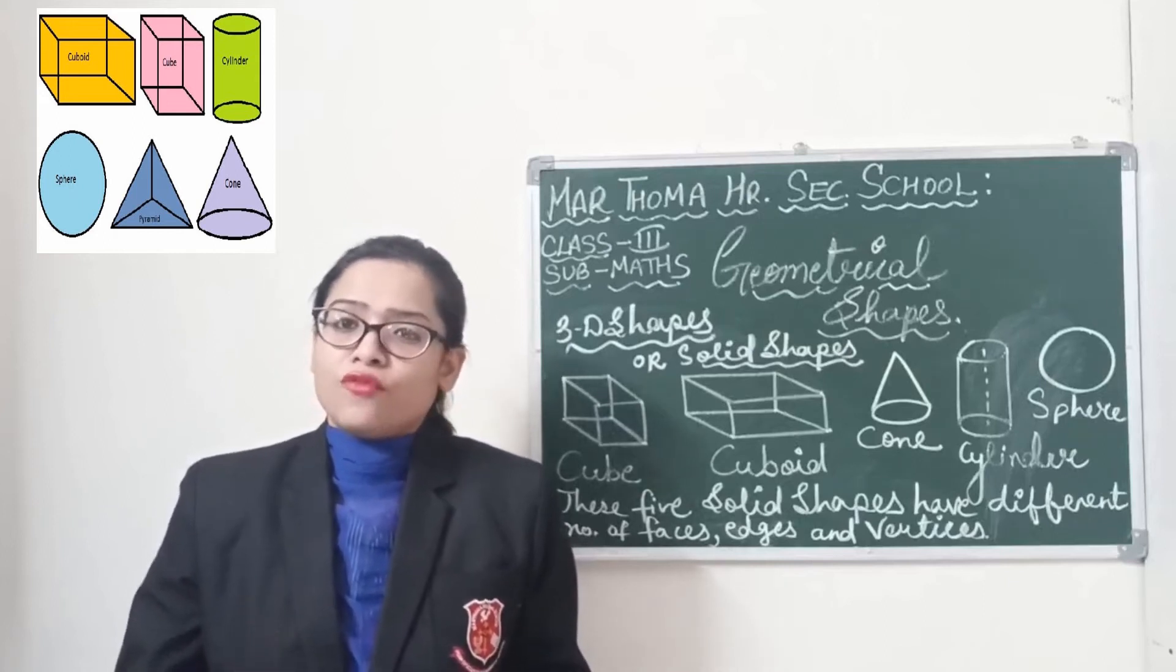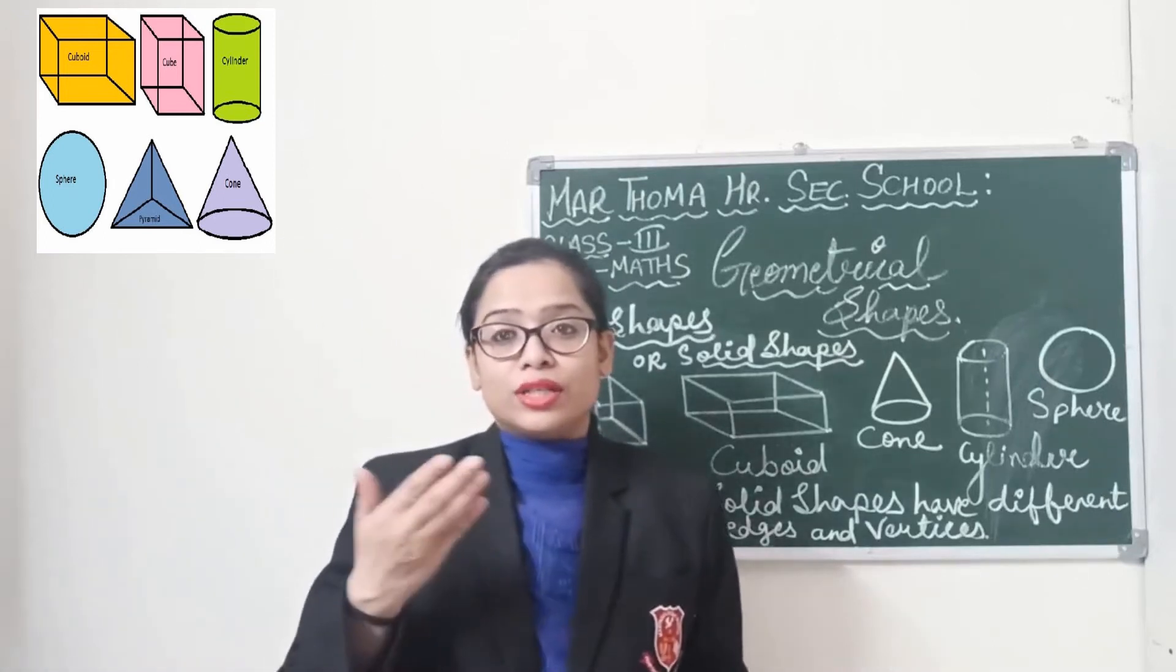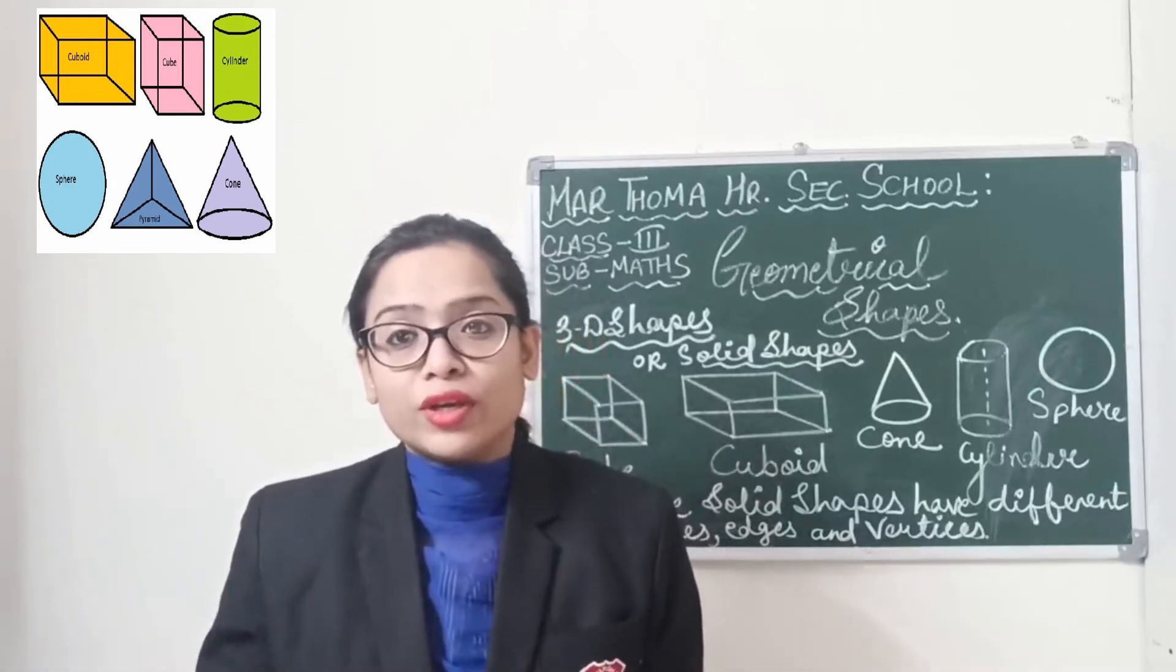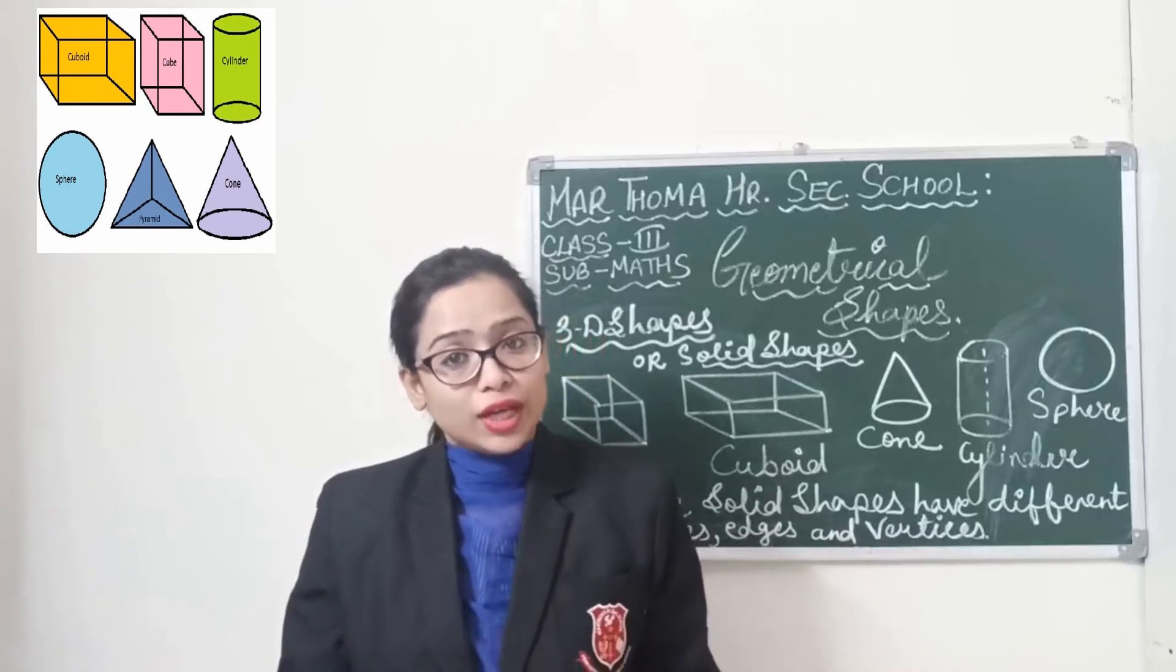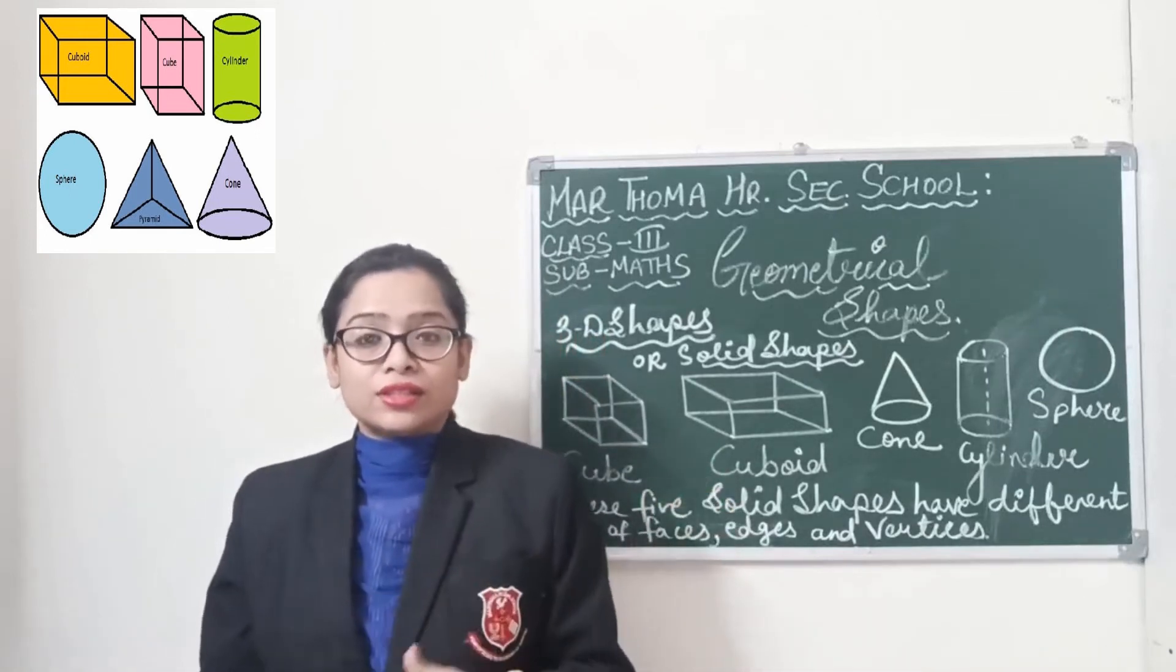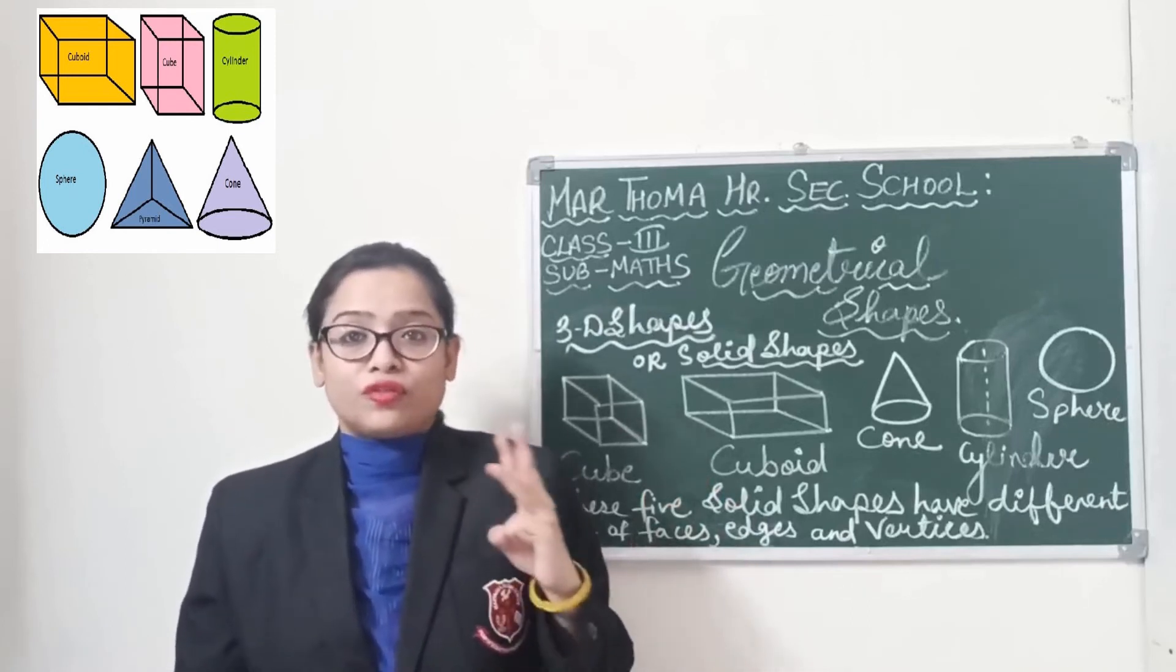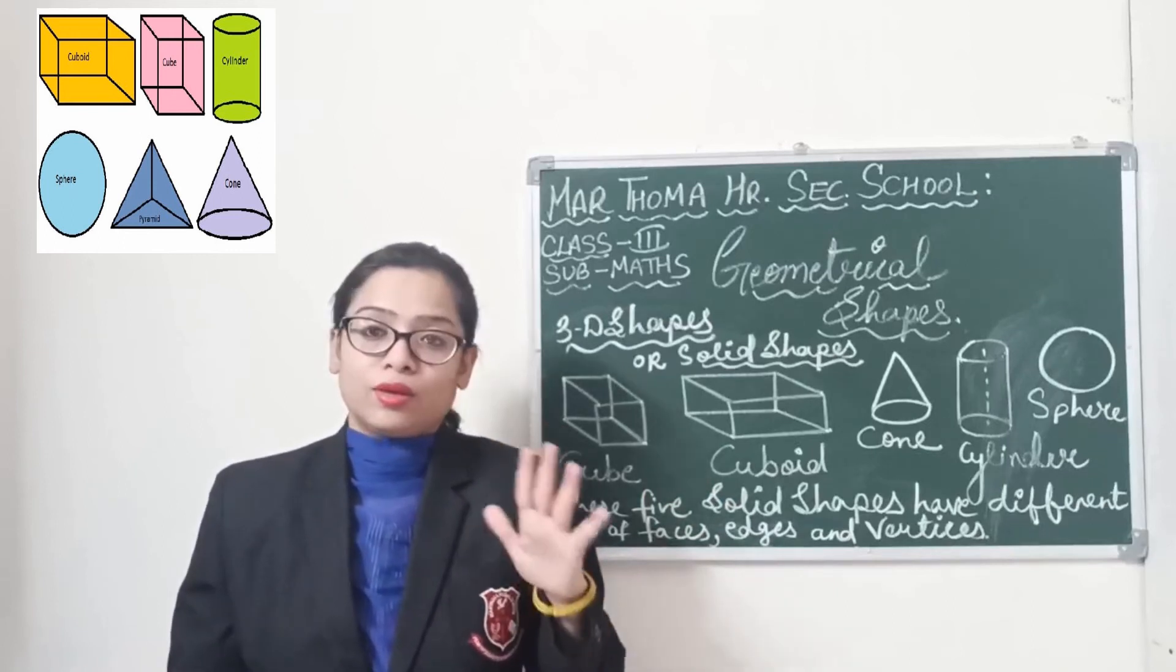So firstly, whenever any person will ask you what are solid shapes and how many figures constitute solid shapes, you have to say solid shapes consist of five figures: cylinder, cone, sphere, cube, and cuboid.